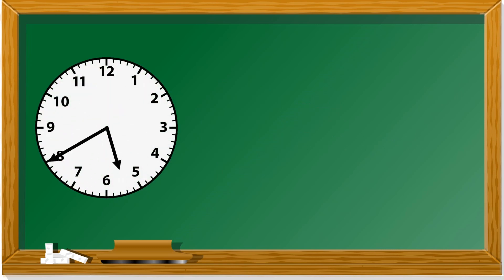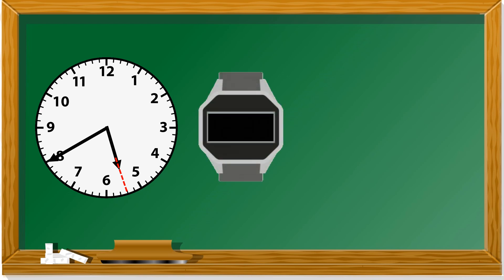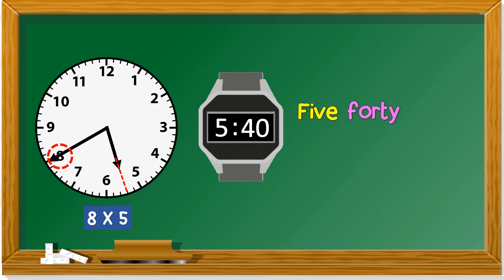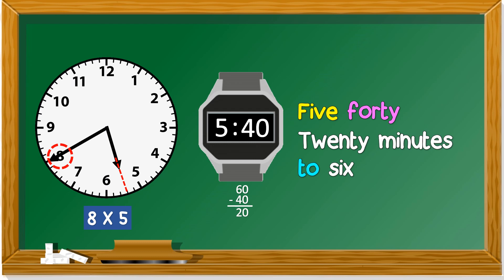Next example. The hour hand is between 5 and 6 — just past 5, so you write 5. The minute hand points to 8, and 8 times 5 is 40. So it's 5:40. Or, remember this area is 'to.' How many minutes to? A complete circle is 60 minutes, minus 40 gives you 20. So you can also say '20 minutes to 6.'